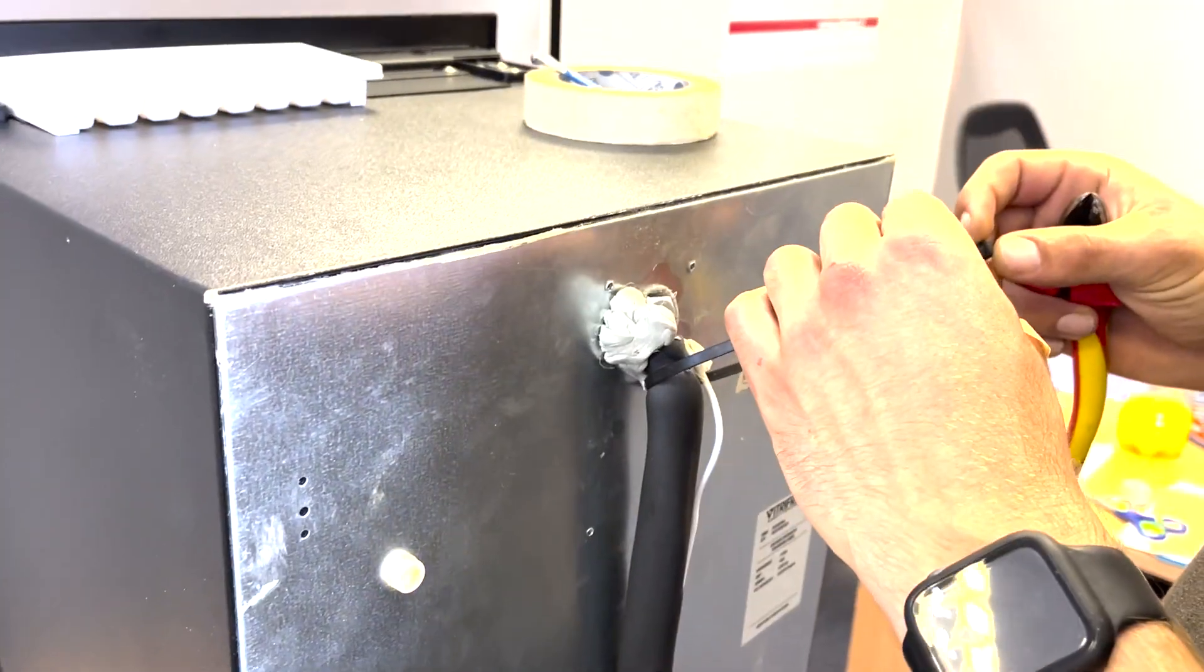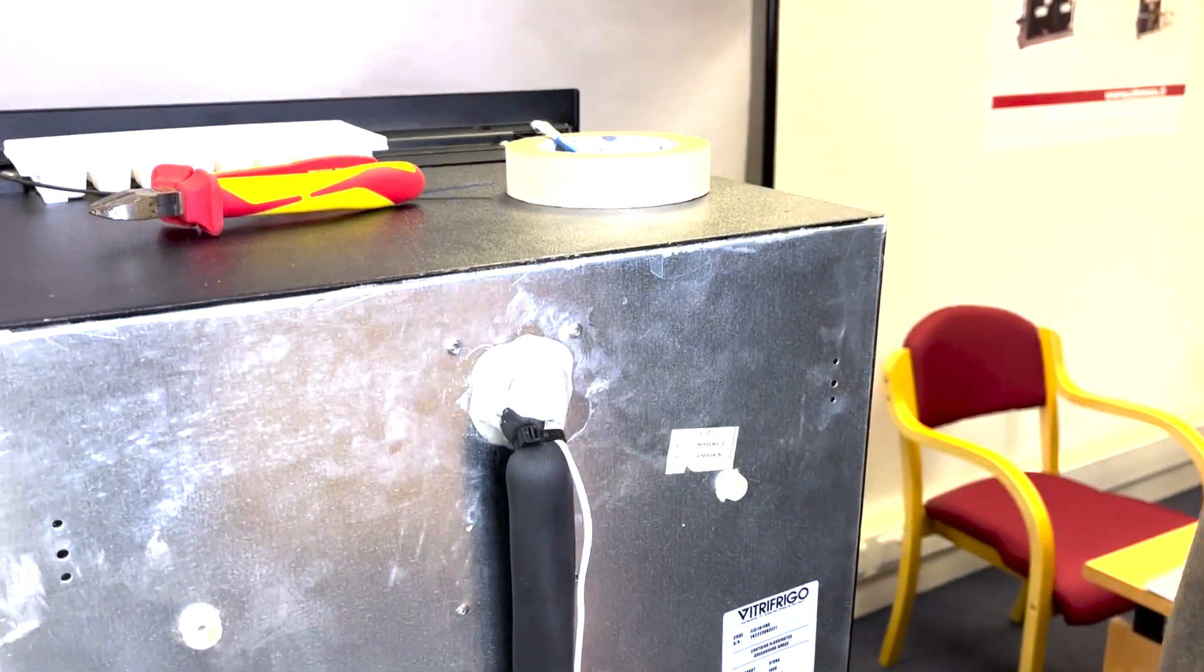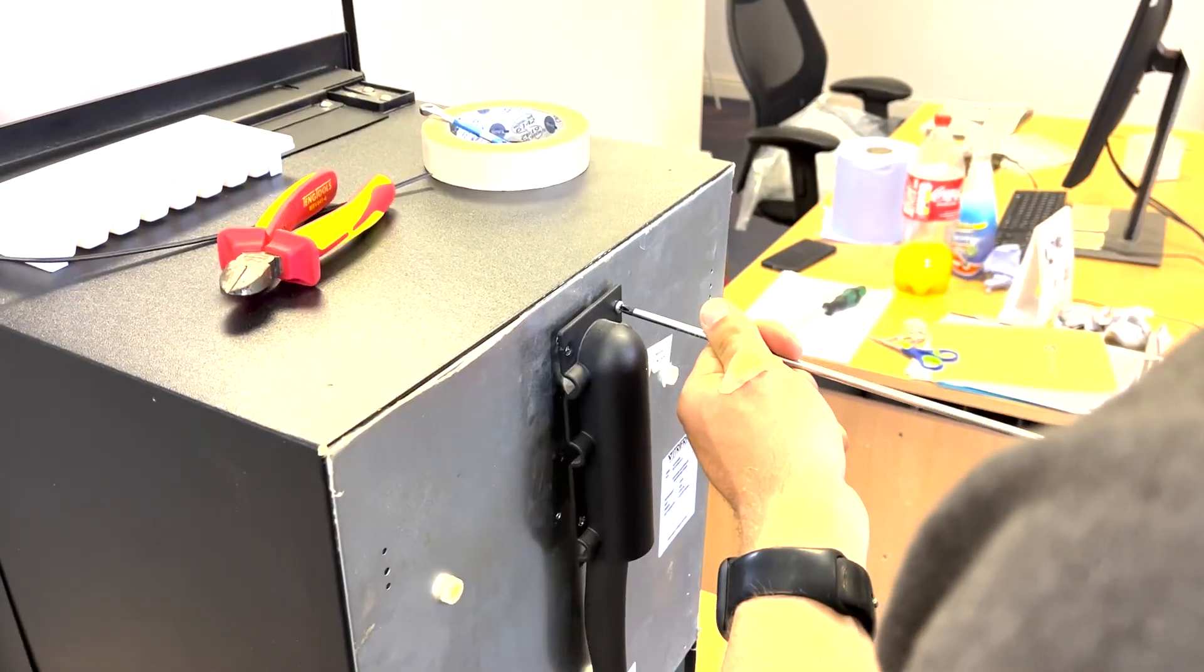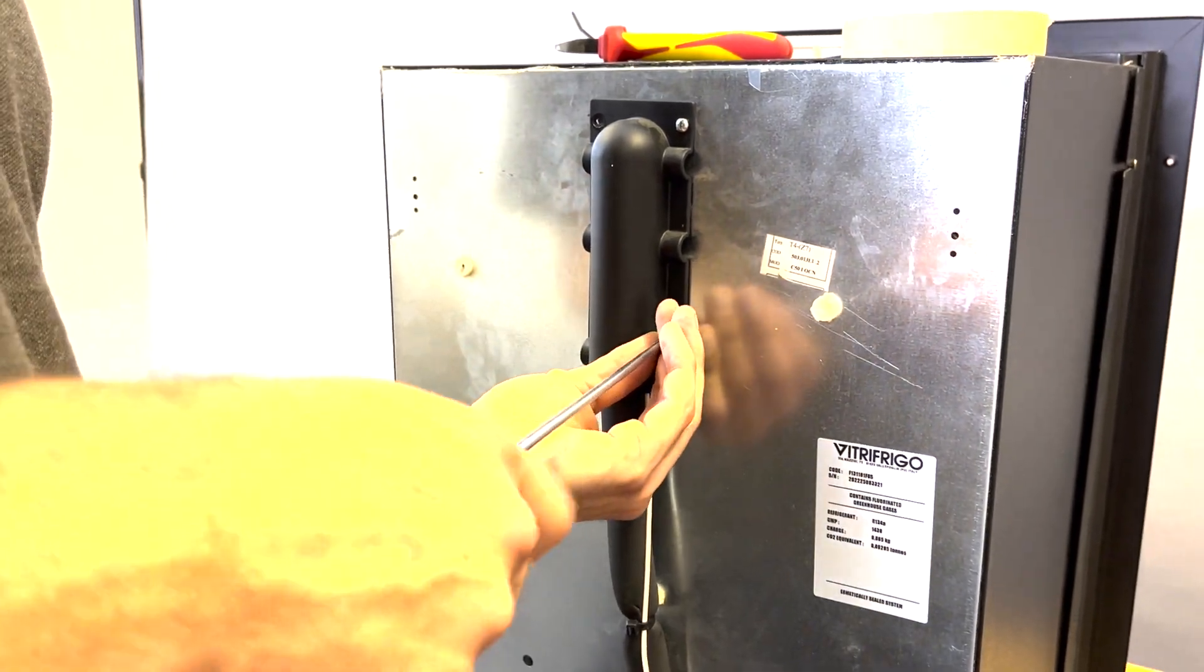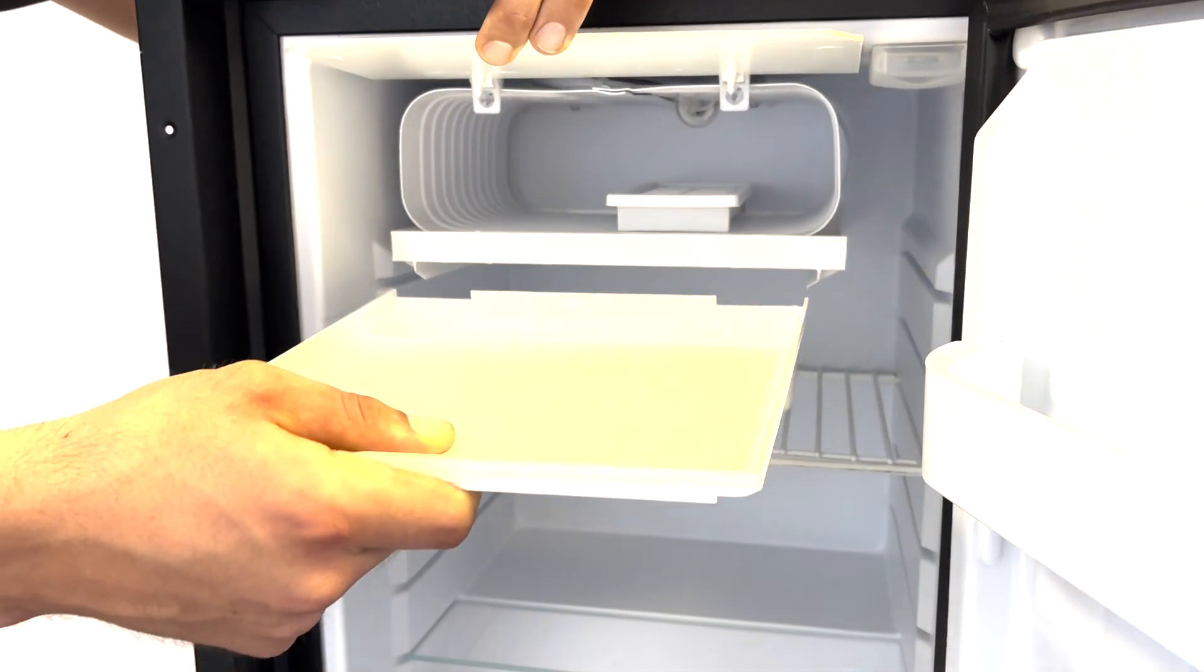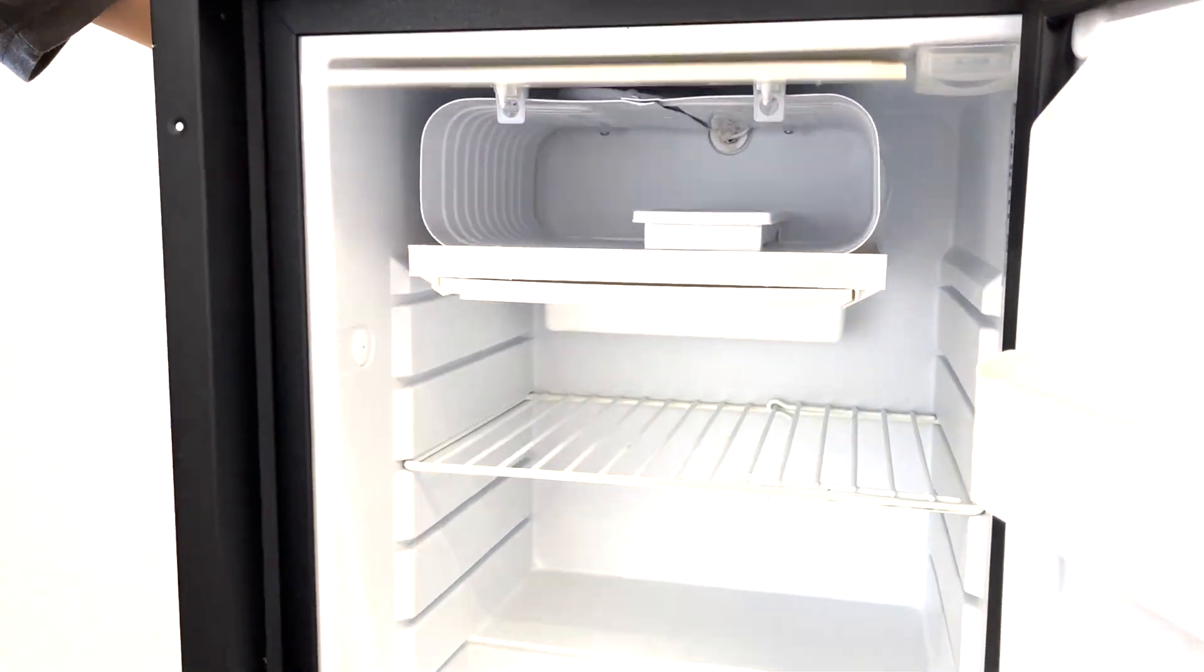Replace the two cable ties and reapply the sealant. Refit the black plastic cover. Insert drip tray back into the fridge. The job is now complete.